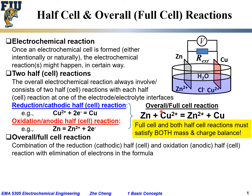When you combine these two — adding left plus left, right plus right — and the electrons cancel out, we get the overall full-cell reaction. Let's check mass: one zinc atom on the left, one on the right; one copper atom on the left, one on the right — mass is balanced. For charge: on the left side, the net charge is 2+; on the right side, the net charge is also 2+. So both mass and charge are balanced for the overall full-cell reaction.